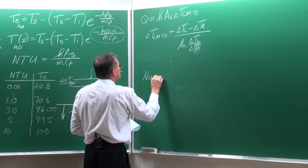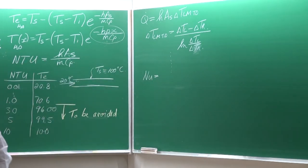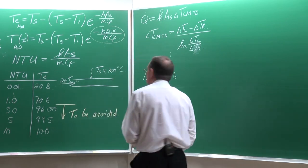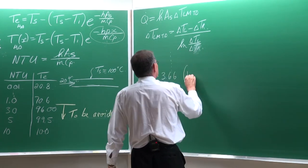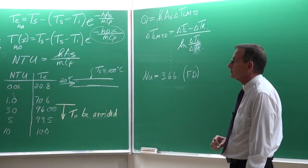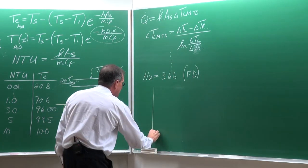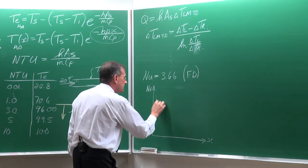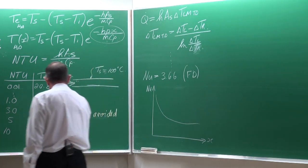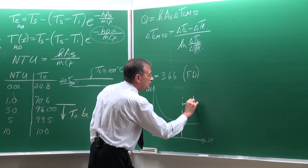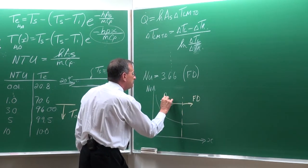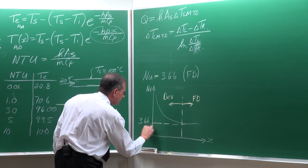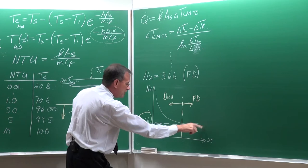Continuing from the derivation: just as in the constant heat flux case, the Nusselt number for constant wall temperature is now 3.66, and this is only valid for fully developed laminar flow. As a function of x, the Nusselt number starts high in the developing region and asymptotes to 3.66. While developing, it is always higher than 3.66.